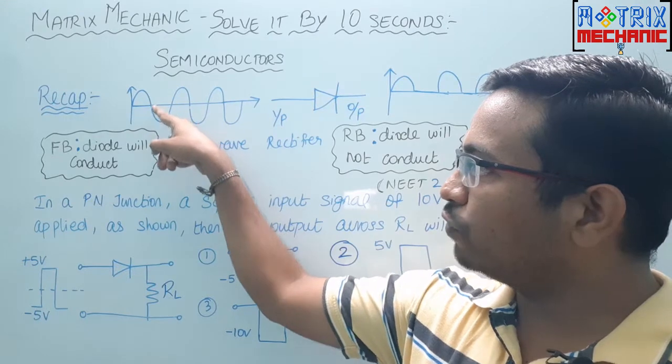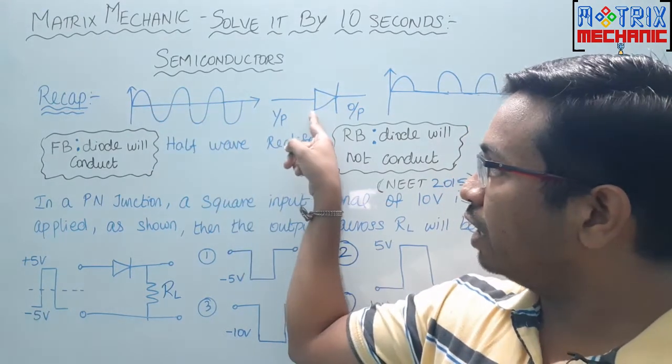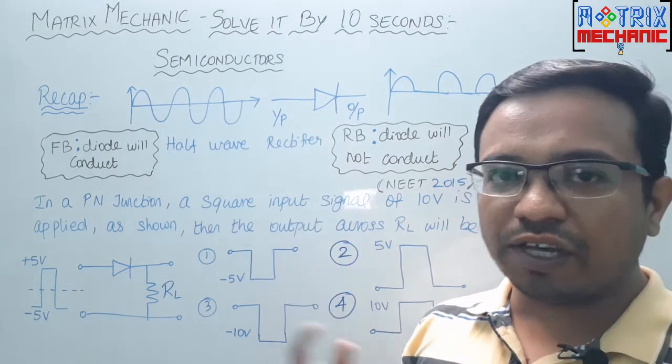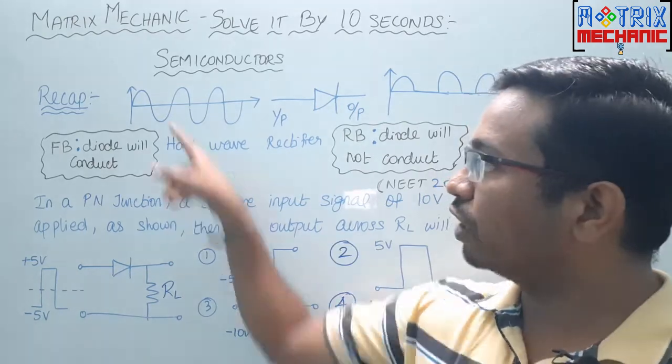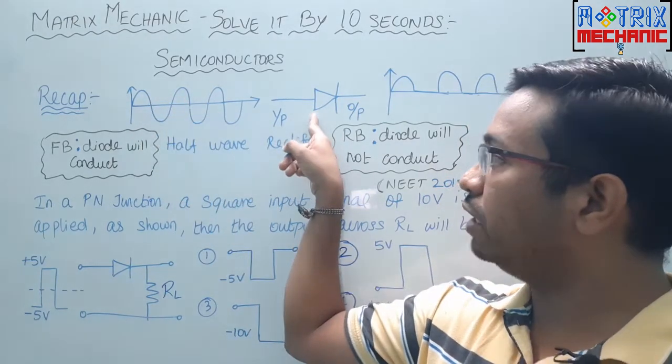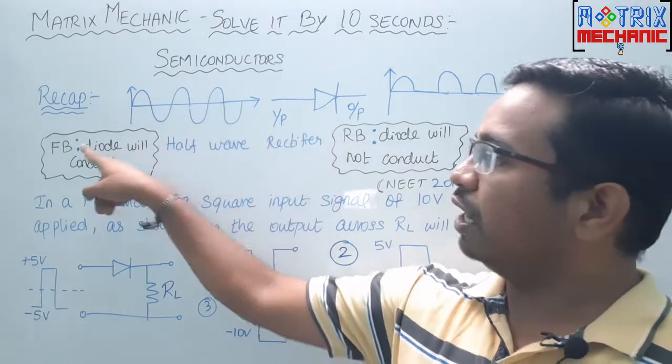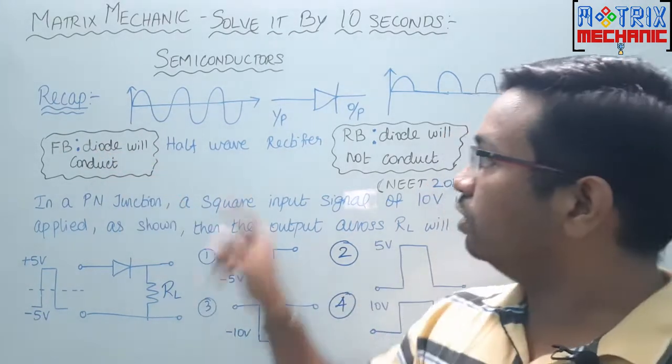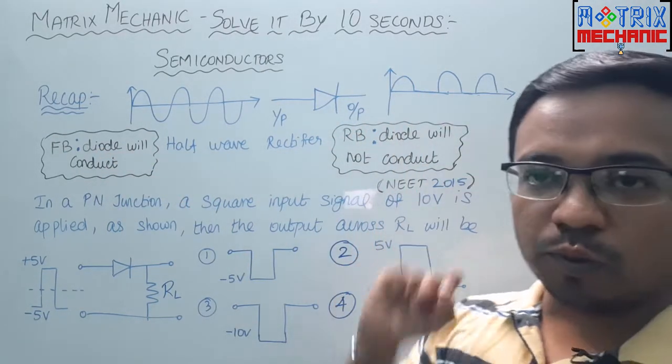The positive amplitude of this AC current when it enters into P type, it is what we call a forward bias. When positive peak enters into the P type, that is forward bias. In forward bias, the diode will conduct. So this we will have an output.